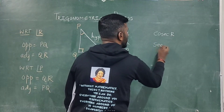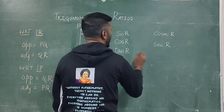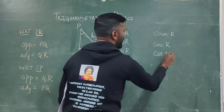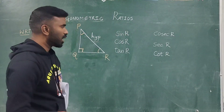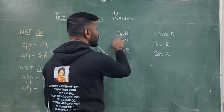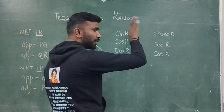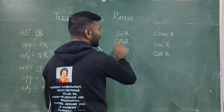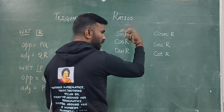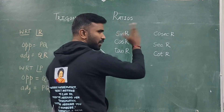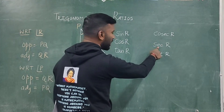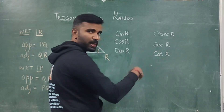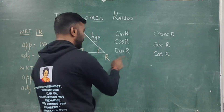If you know sine R and reverse the ratio, you will get cosecant R. If you know cos R and take the reciprocal, you will get secant R. The reciprocal of tan R is cot R.